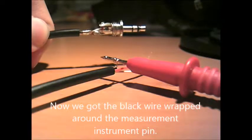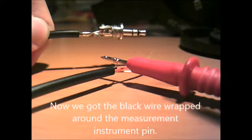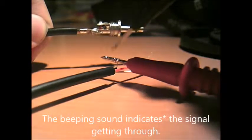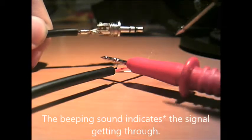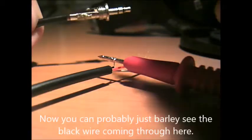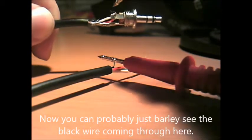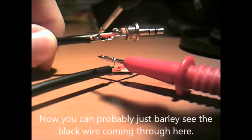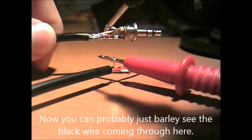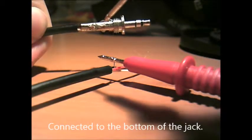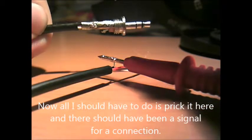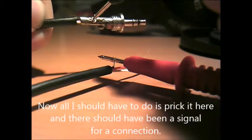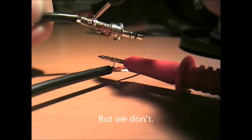Now we get the black wire wrapped around the measuring instrument pin. The beeping sound is the signal getting through. Now you can probably just barely see the black wire coming through here, connected to the bottom of the jack. Now all I should have to do is prick it here and we should have the signal for our connection. But we don't.